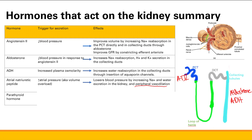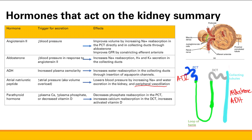The parathyroid hormone also acts on the kidney. What are the triggers for parathyroid hormone? It's pretty much the opposite of what it normally does — low calcium or increased plasma phosphate both trigger parathyroid hormone. The other thing that triggers it is decreased vitamin D, because vitamin D normally blocks parathyroid hormone. What parathyroid hormone does is it decreases phosphate reabsorption in the proximal convoluted tubule, and it increases calcium reabsorption in the distal convoluted tubule. PTH acts in both those locations. The other thing it does is increase activated vitamin D, which helps promote calcium reabsorption. Vitamin D also promotes phosphate absorption.